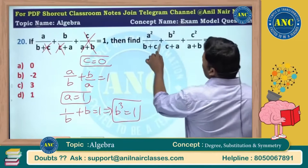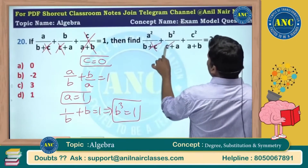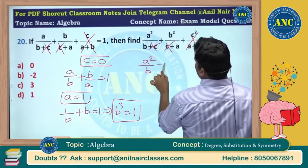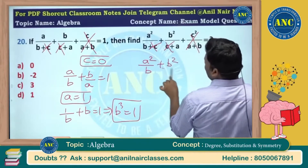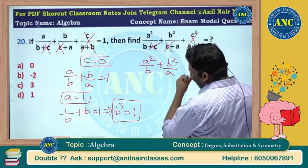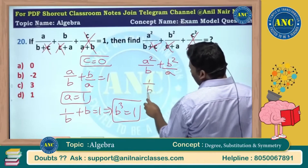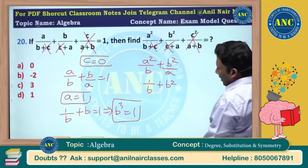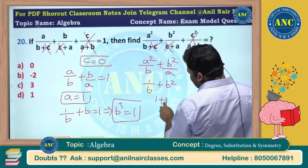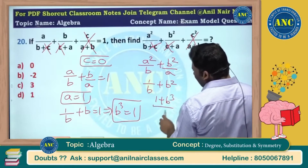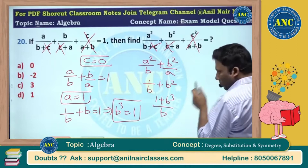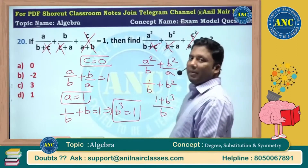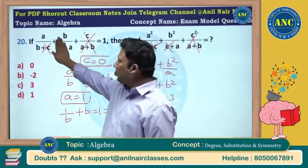With c = 0, the expression becomes a²/b + b²/a. With a = 1, it is 1/b + b. So: 1/b + b² (with a = 1), which becomes 1/b + b³ divided by b, giving (1 + b³) divided by b.